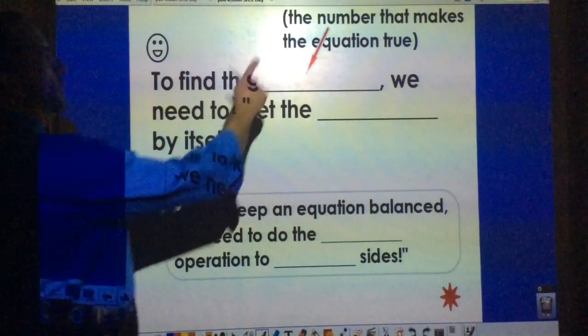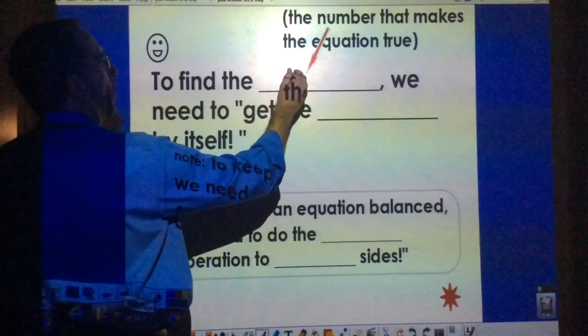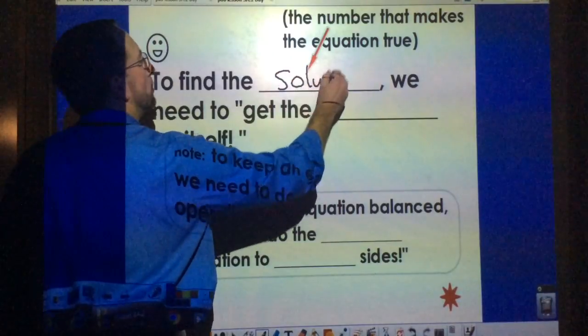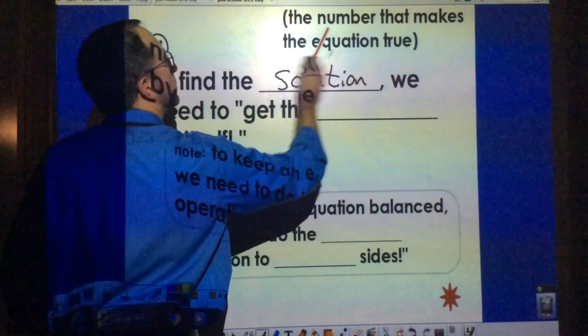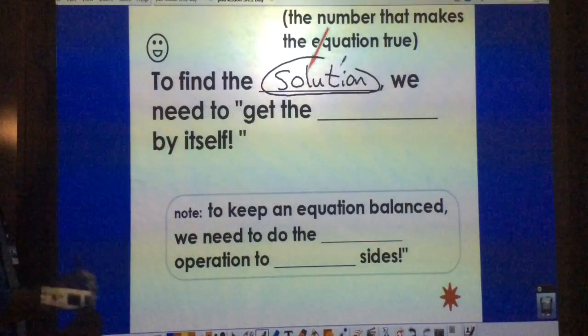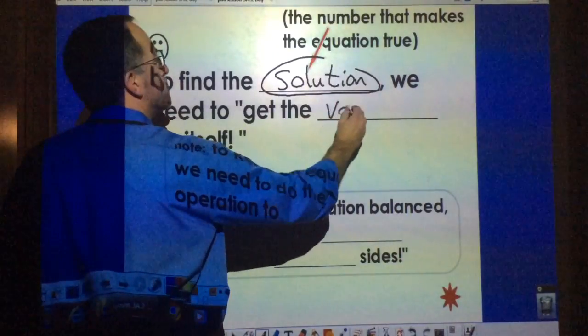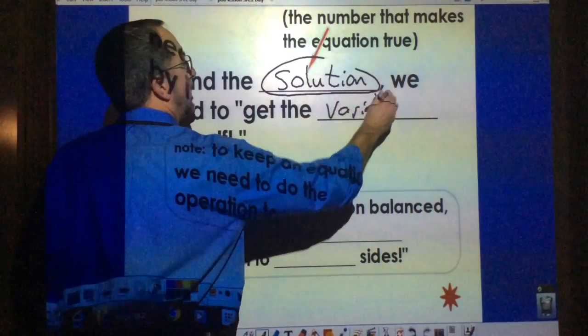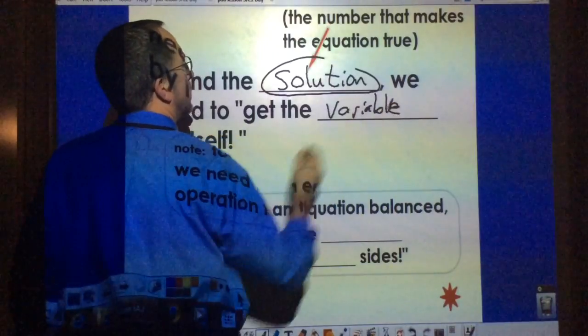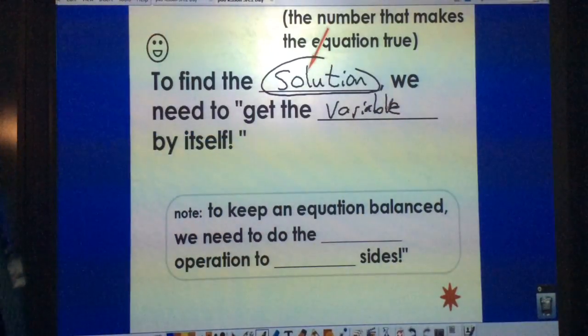And to find the number that makes the equation true, which we call the solution, we need to get the variable, which is the unknown number, by itself, just like we did the other day in the activity with the pen and the erasers and the paper clip.